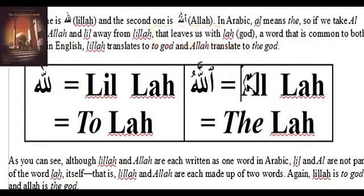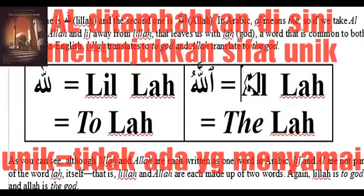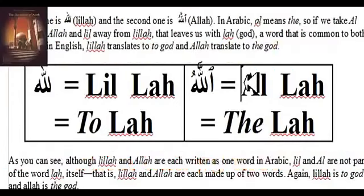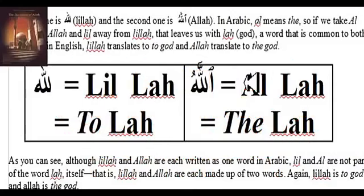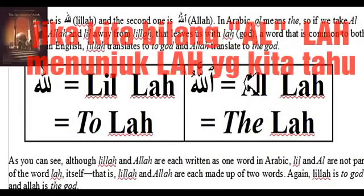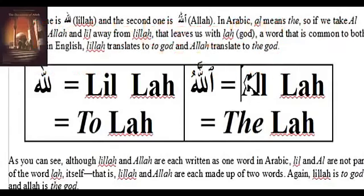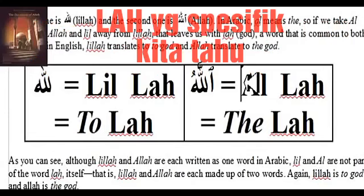The 'Al' in here is added because it's about something unique. Like, as an example, in English you say 'home' — it's any home. But when you say 'the home,' you mean a specific home, right? In Arabic it's the same. So when we say 'Allah,' we are talking about a known, specific one.